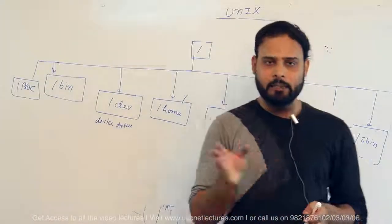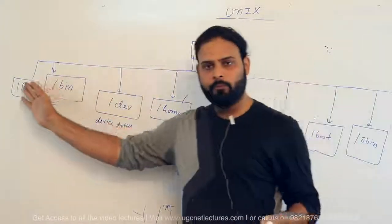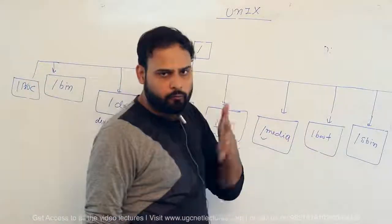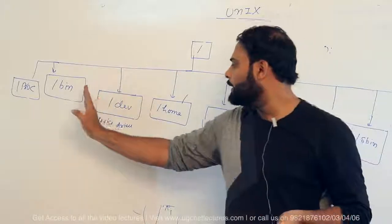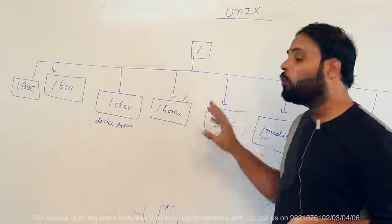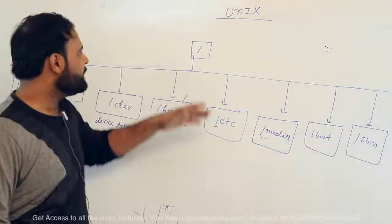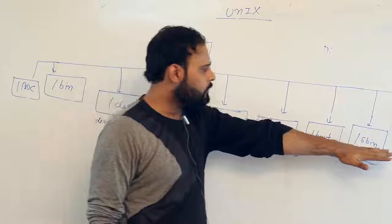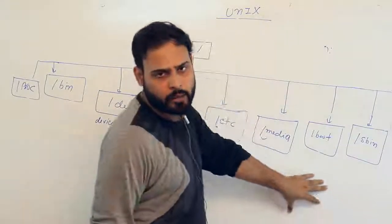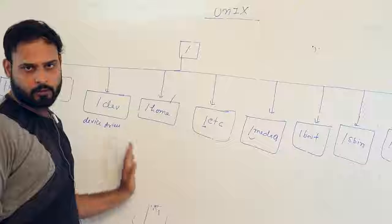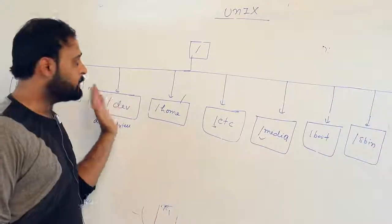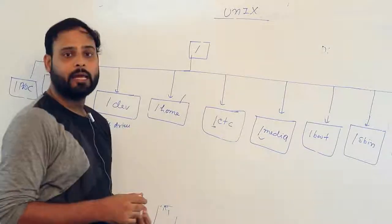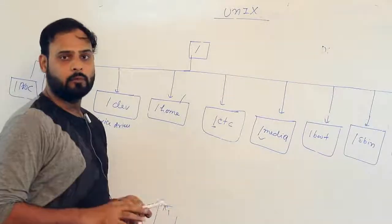In my system I can show you all the directories in detail and explore them further. There are also other directories not mentioned here. This has been a rough overview of the UNIX file system directory structure, and in the next lecture I will elaborate line by line in more detail. Thank you.